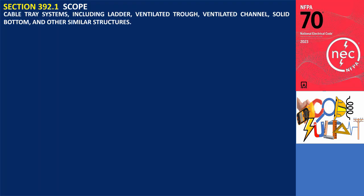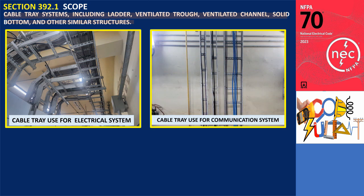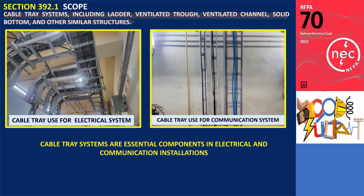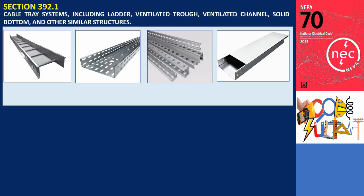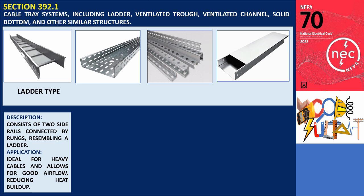Section 392.1 Scope. This article covers cable tray systems, including ladder, ventilated trough, ventilated channel, solid bottom, and other similar structures. Cable tray systems are essential components in electrical and communication installations, providing support and organization for cables while facilitating easy installation, maintenance, and future upgrades. The ladder cable tray is notable for its design, consisting of two side rails connected by rungs resembling a ladder. This structure is ideal for heavy cables and allows for good airflow, thereby reducing heat buildup.